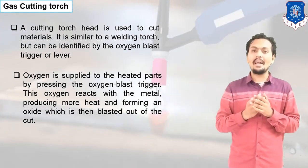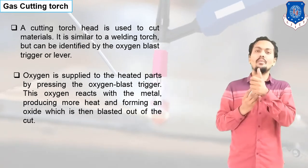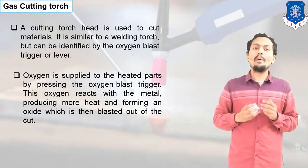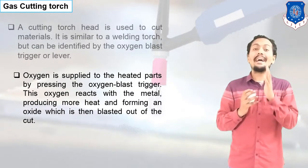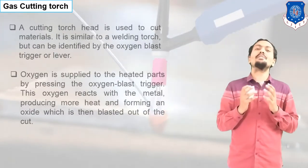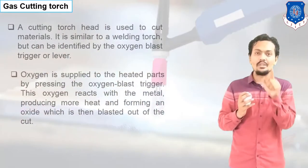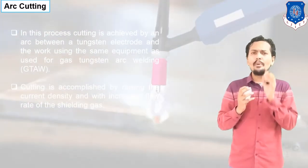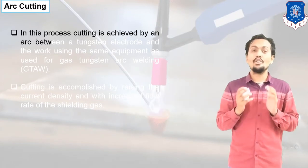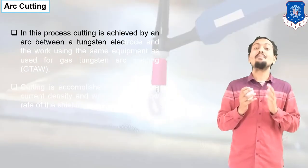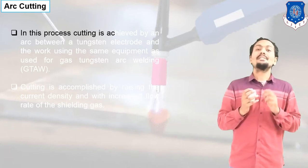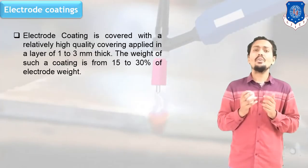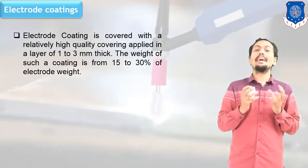Gas cutting is similar in principle to gas welding, but one additional thing is the excessive oxygen supply or blast trigger. Next, let us look at arc cutting. Arc welding setup is used for cutting as well. In arc cutting, the arc welding setup is used, but by setting the parameters we can do the cutting.